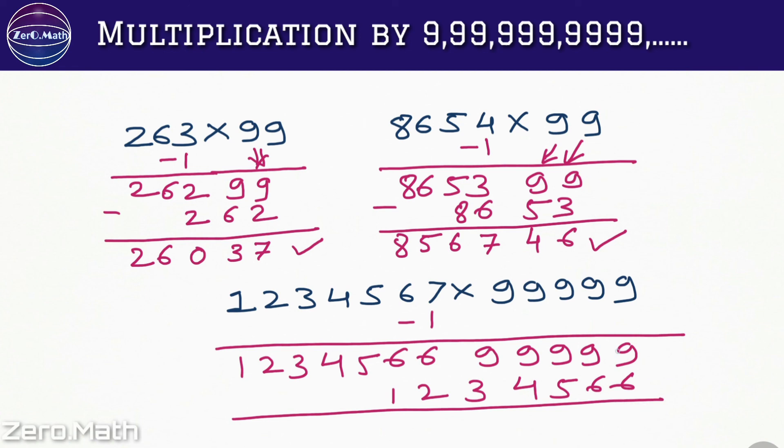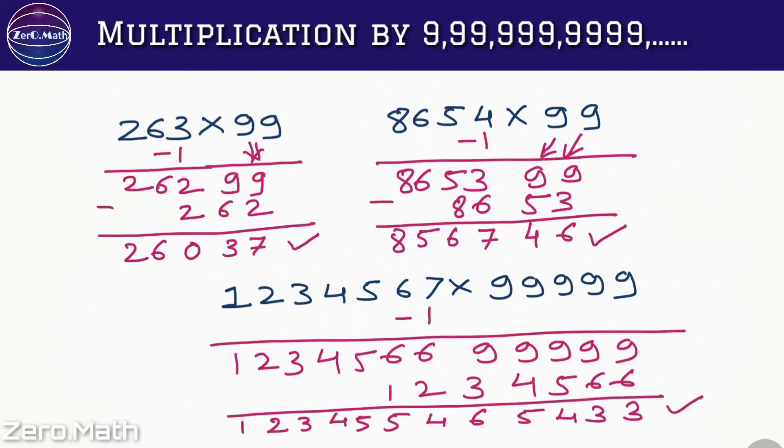We'll get 9 minus 6 is 3, 9 minus 6 is 3, 9 minus 5 is 4, 9 minus 4 is 5, 9 minus 3 is 6, 6 minus 2 is 4, 6 minus 1 is 5, then 54321. So this is our answer. You may verify all the answers with the help of your calculator.